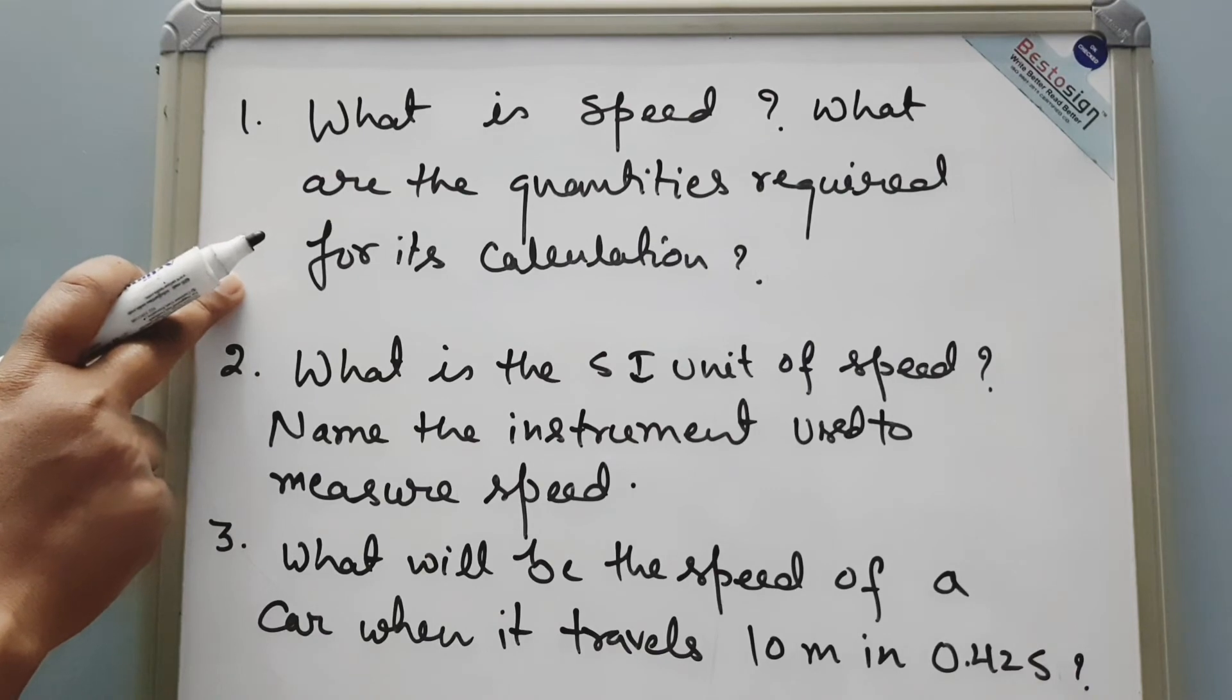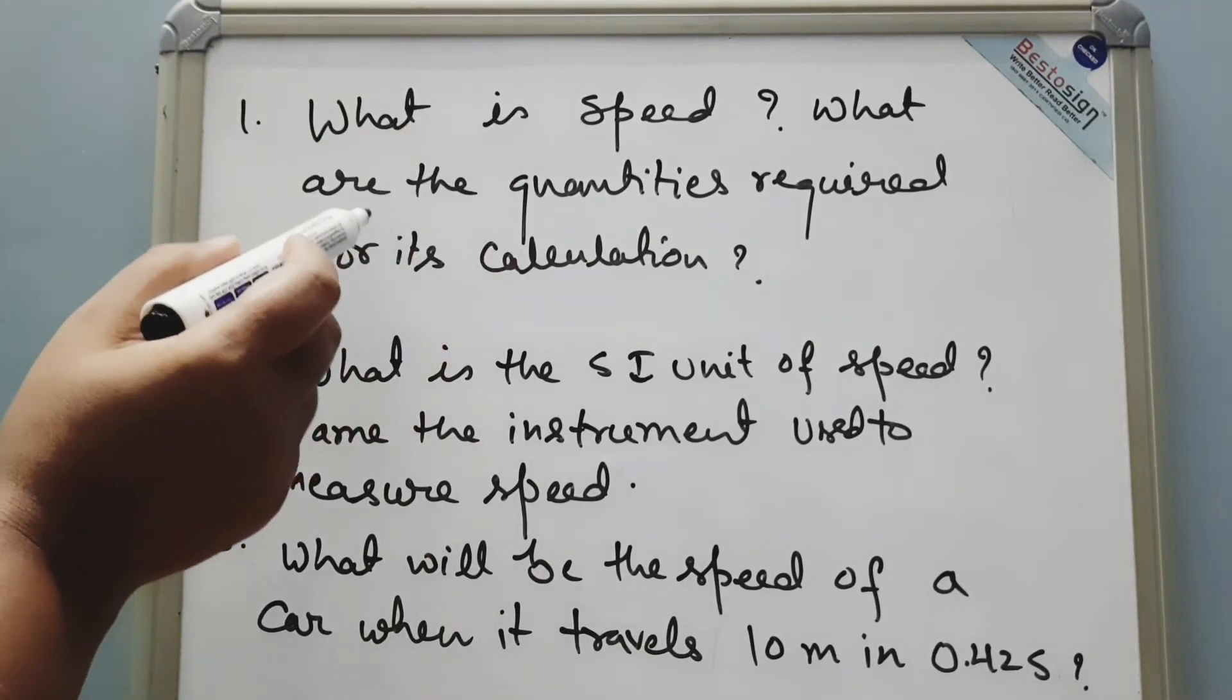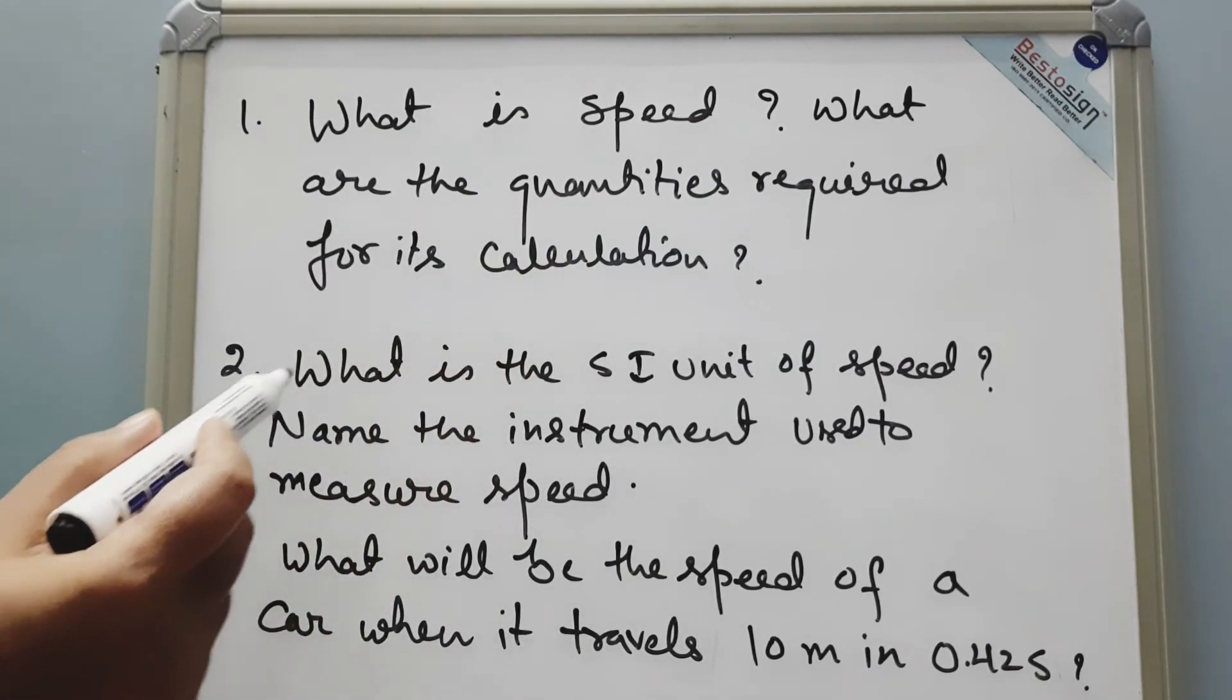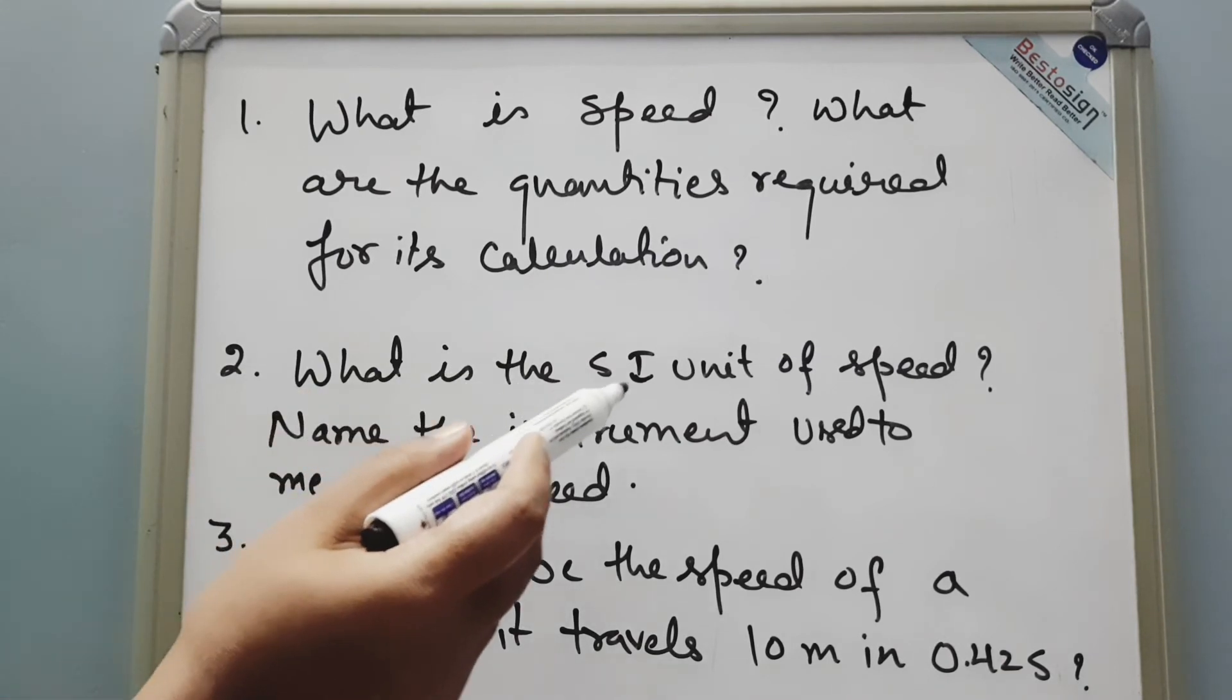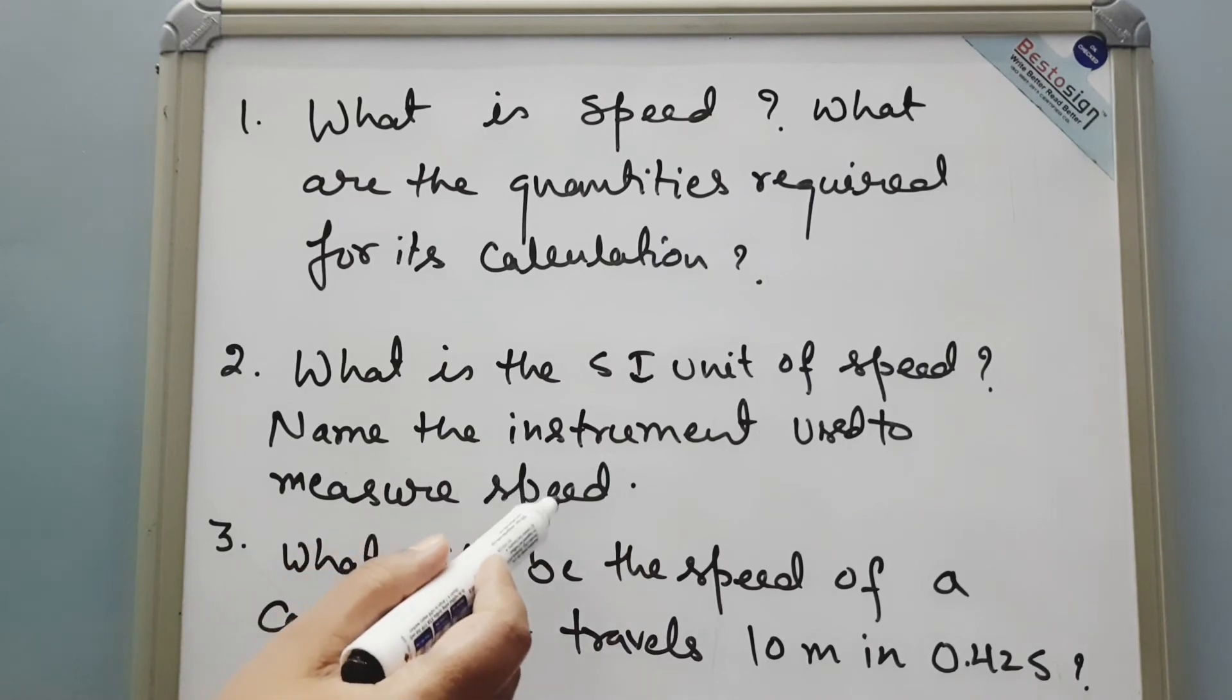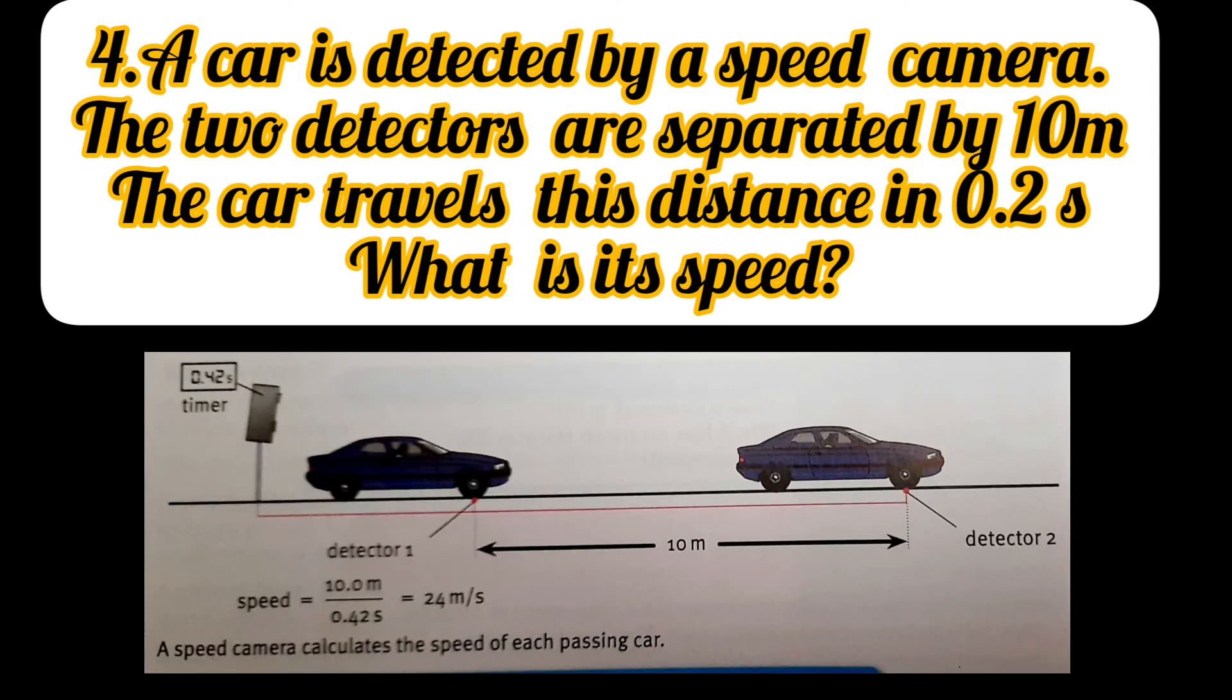After watching this video, you should be able to answer these questions. First: what is speed? What are the quantities required for its calculation? Second question: what is the SI unit of speed? Name the instrument used to measure speed. Third question is: what will be the speed of a car when it travels 10 meters in 0.42 seconds? Answer this question also.